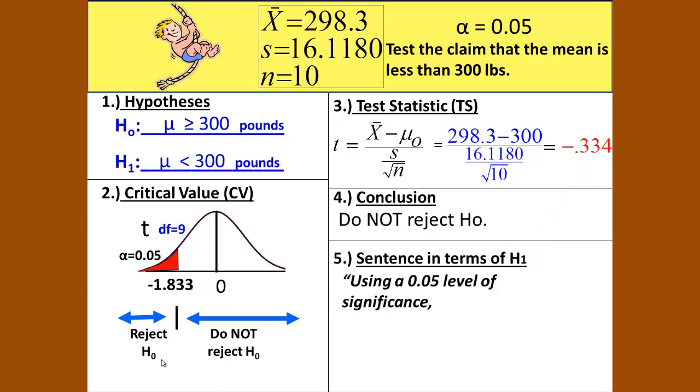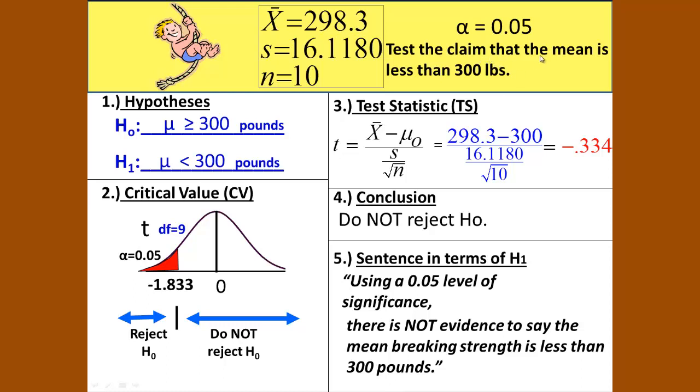We are ready to write our sentence. The first part is always using a [blank] level of significance. So for our case, that's using a 0.05 level of significance. Since we have a not here, there is not evidence to say that the mean breaking strength is less than 300 pounds.